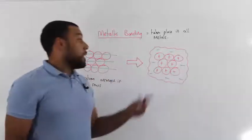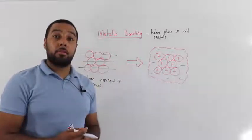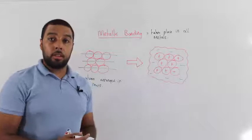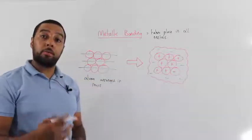Now what happens is that the outer shell electron from these atoms becomes delocalized. When an atom loses an electron, it becomes an ion.